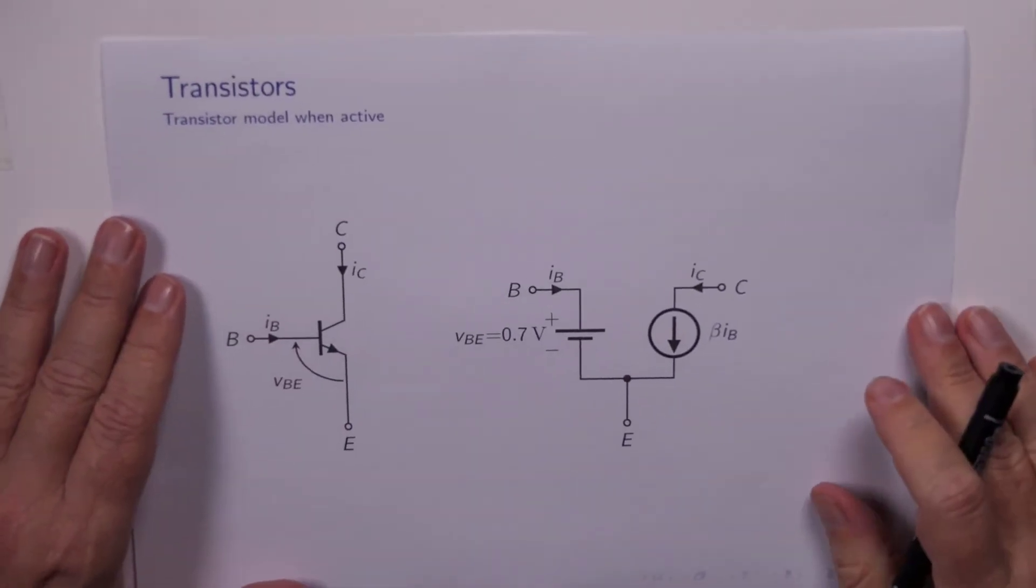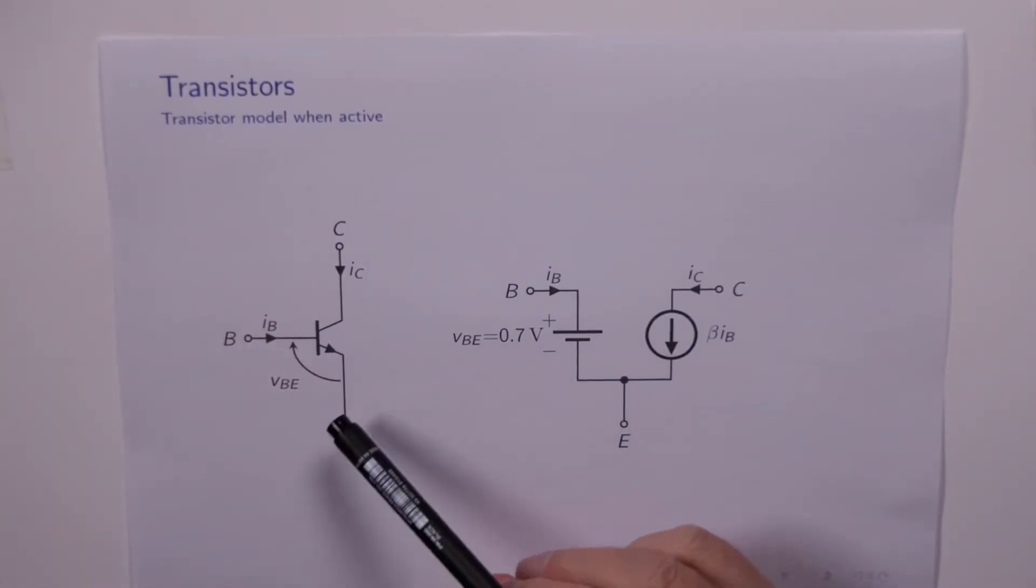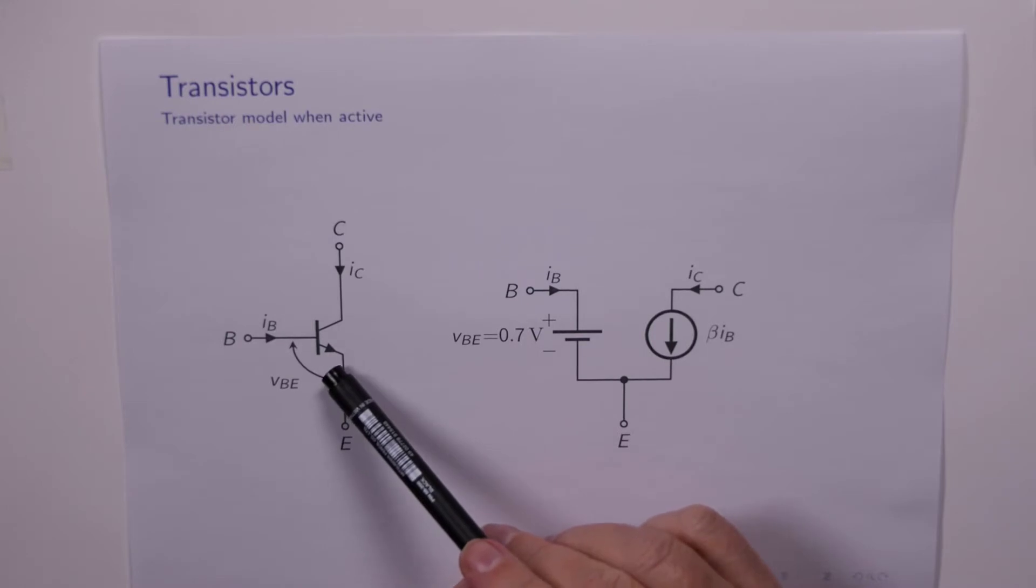Which just leaves us with the active region. And the active region frankly is no more complicated. Remember that when the transistor is in the active region, VBE is equal to 0.7 of a volt because the device is conducting.